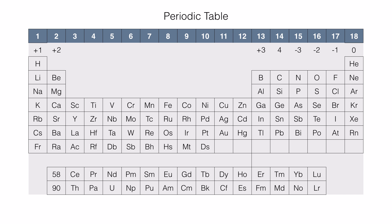Group 1 and group 2 elements cannot have variable valencies and therefore all elements will have the same valencies as indicated. If you go to elements between groups 3 and 12, they are transition metals and they tend to have more than one valency. In lower classes, understanding which elements will have more than one valency is helpful. Most of the time, the name of the compound indicates the oxidation state or valency of these elements.